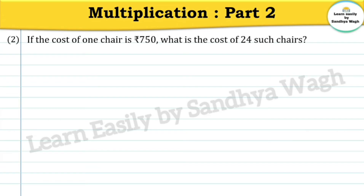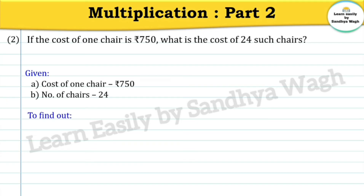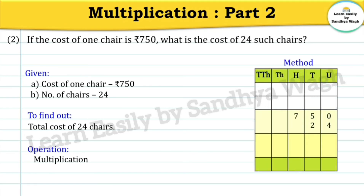Let's see the next example. If the cost of 1 chair is 750 rupees, what is the cost of 24 such chairs? What is given: cost of 1 chair is 750 rupees, number of chairs is 24. What do we have to find out: total cost of 24 chairs. For that we will do multiplication: 750 multiplied by 24.